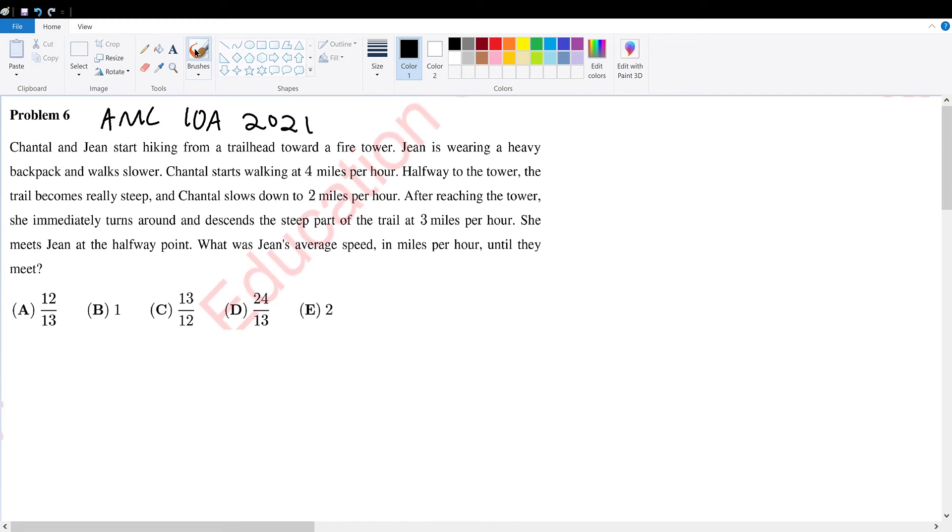AMC 10A 2021 problem 6. We have these two people hiking and we want to find one of the person's average speed in miles per hour.